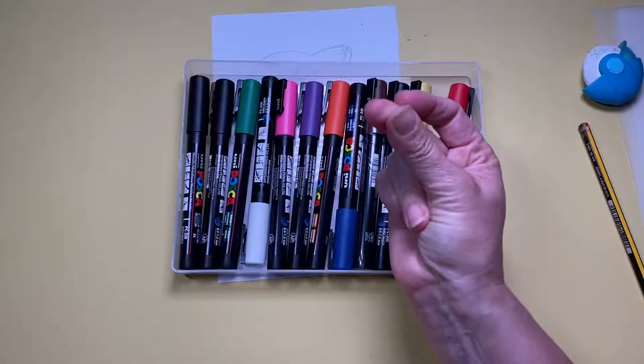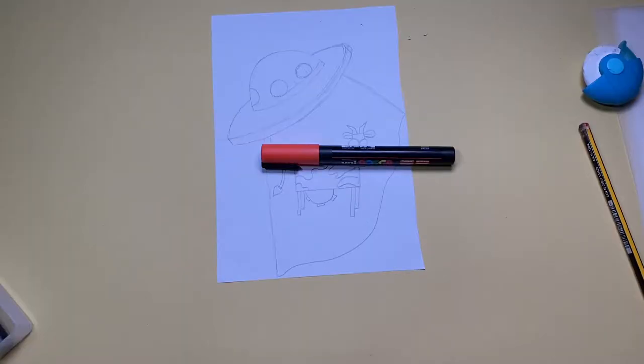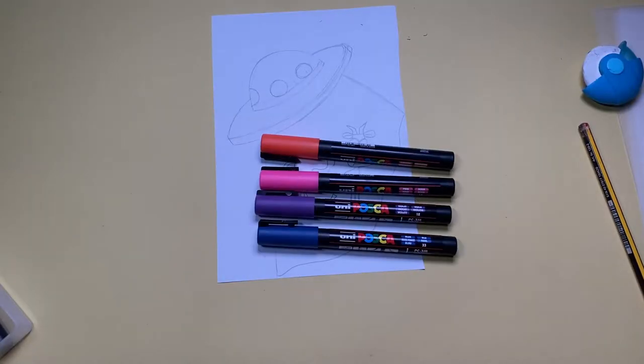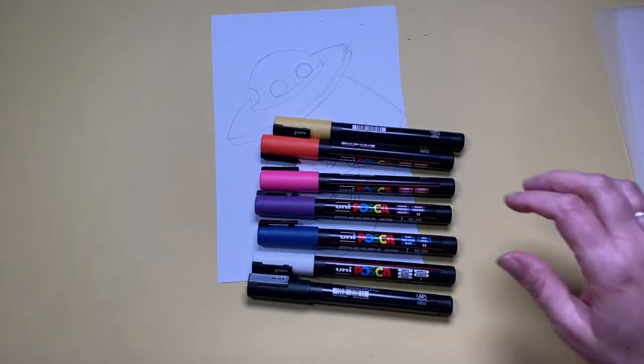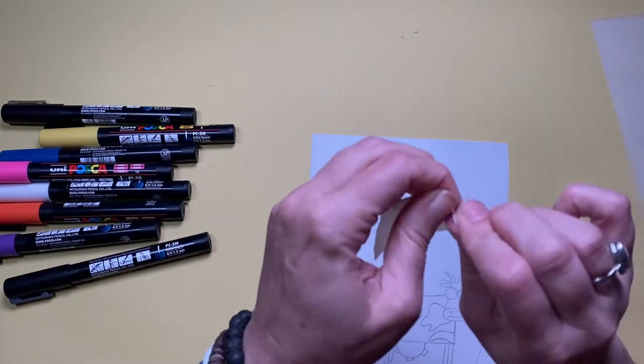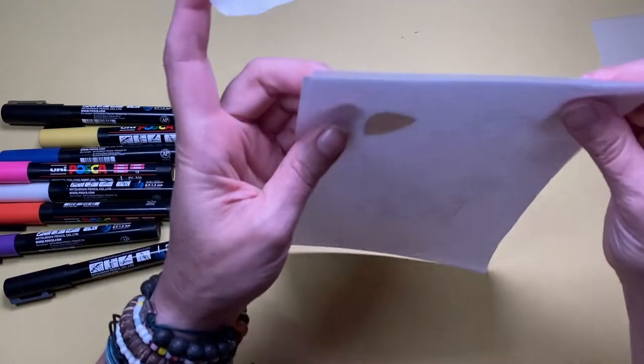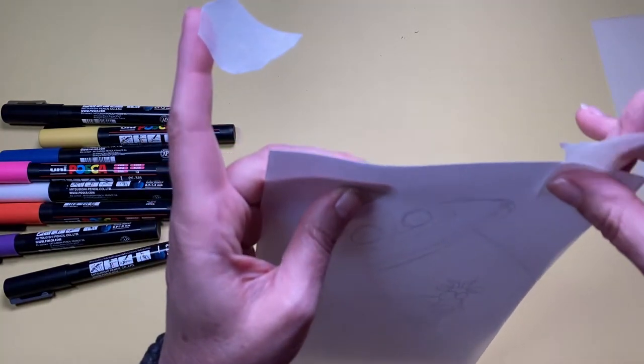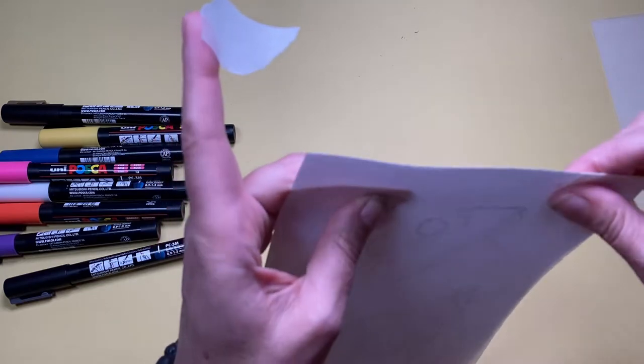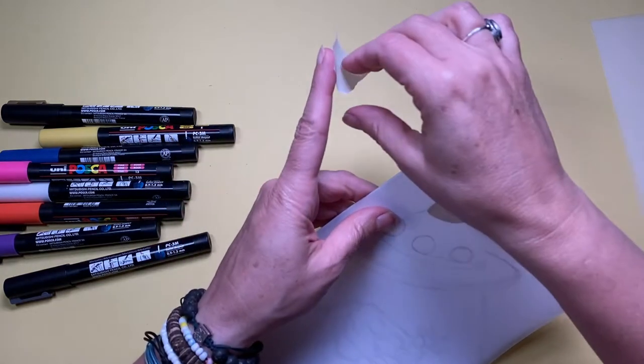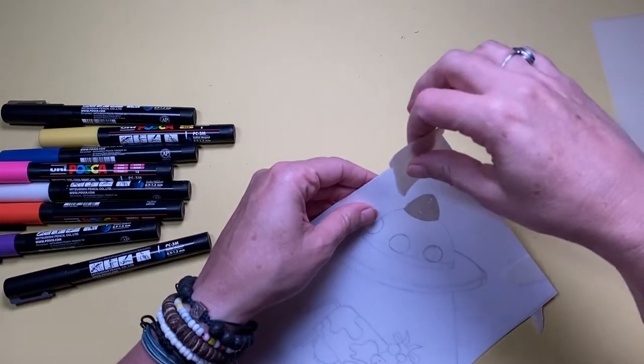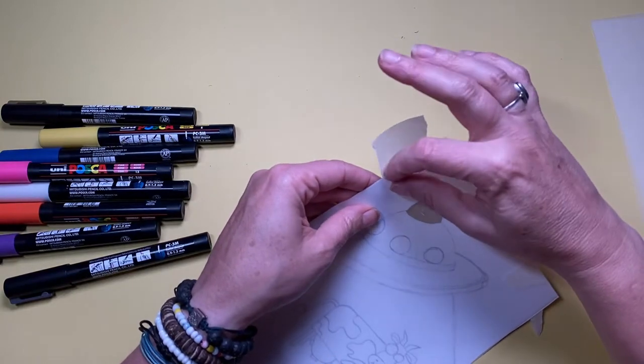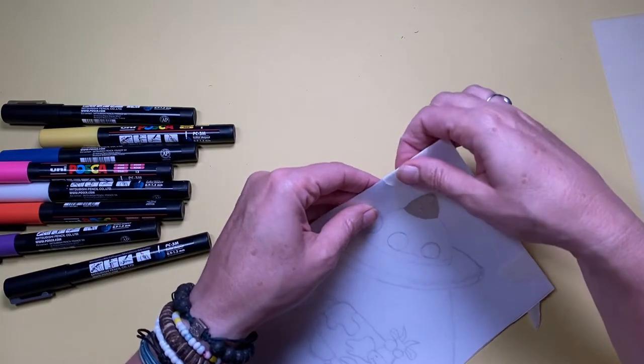Here's my lovely Posca pens and these are the colors I'm going to be using. I stick the shrink plastic onto the paper with the design on just to stop it moving around while I'm laying down the Posca pen colors. In my excitement to get this completed, I did start coloring in on the actual paper, I don't know why, I just got over excited.